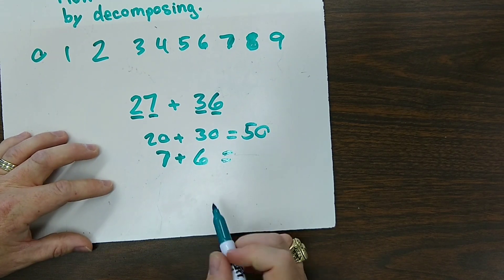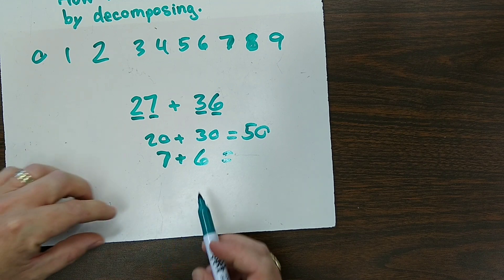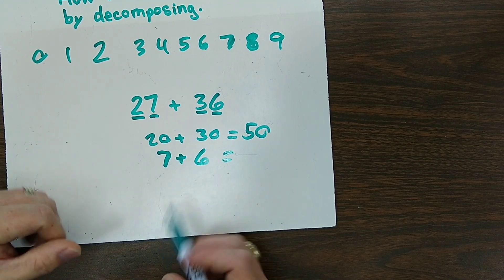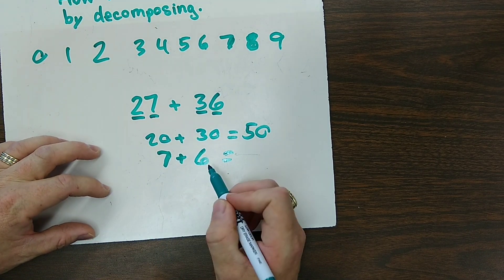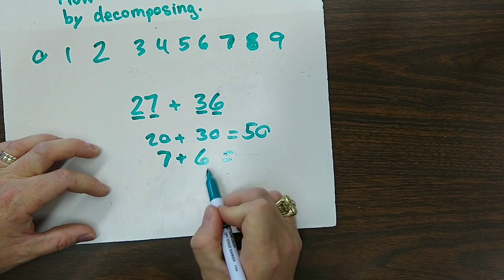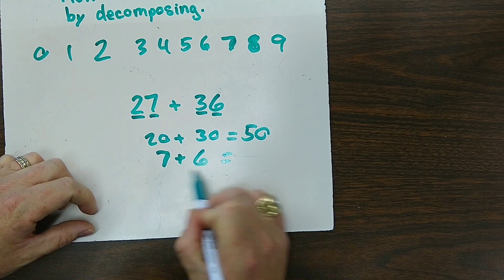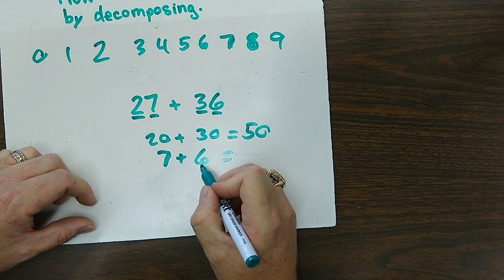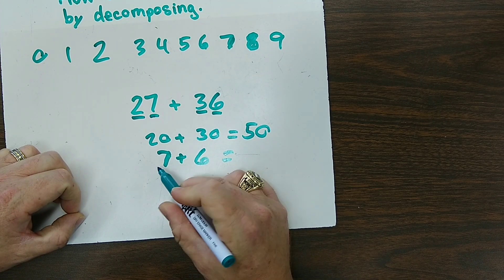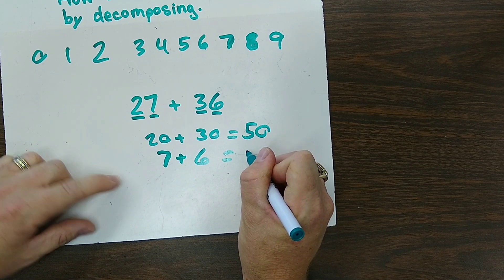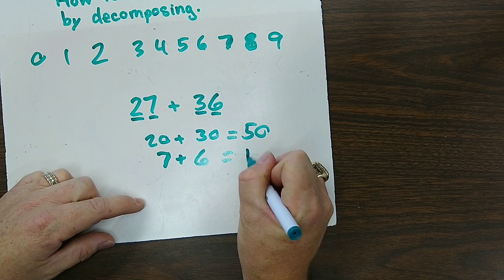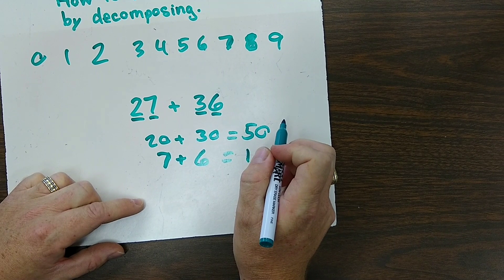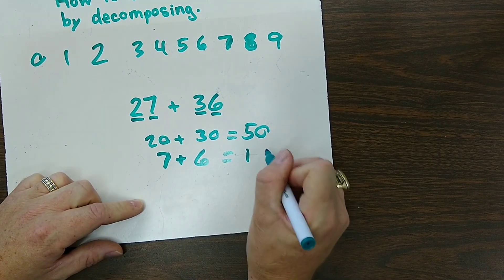Now here's where we can pull some of those other strategies that we've learned, like doubles and near doubles and doubles plus 1, or you can use your make a 10 strategy at this point, just something you can slip in to speed this up so you don't have to count your fingers. 7 plus 6. So thinking ahead, I'm thinking 6 plus 6 plus 1. So 6 plus 6, if you know your doubles, is 12, and 7 is one more. So that's 13.